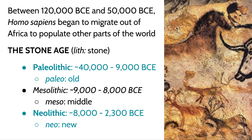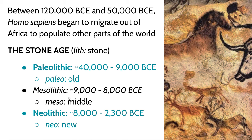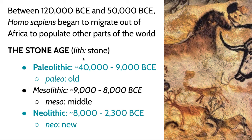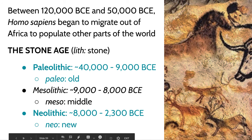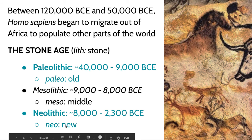Between 120,000 BCE and 50,000 BCE, humans began migrating out of Africa to populate the rest of the world. There are three ages designated when we talk about prehistoric art: the Paleolithic, the Mesolithic, and the Neolithic. The Mesolithic is a transition period between the other two. For those who know Greek and Latin roots: 'lith' means stone, 'paleo' means old, and 'neo' means new — so these are essentially old stone, middle stone, and new stone ages.